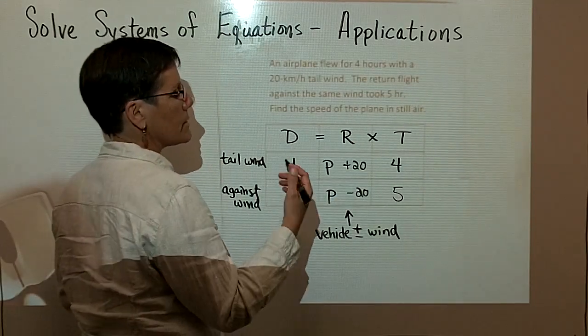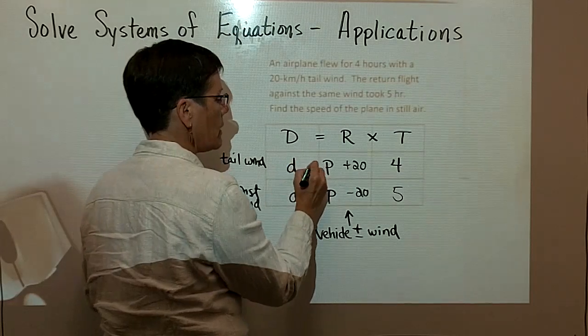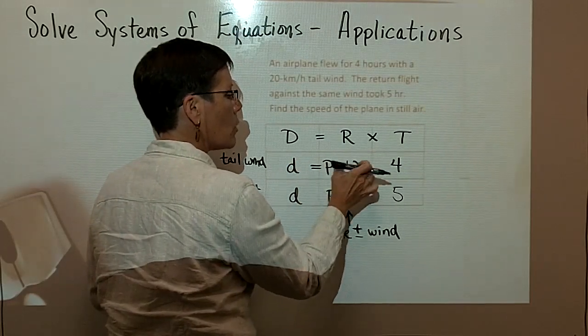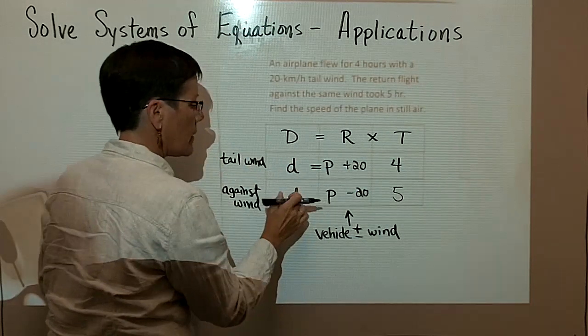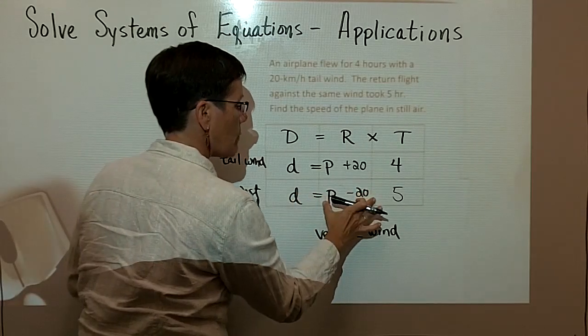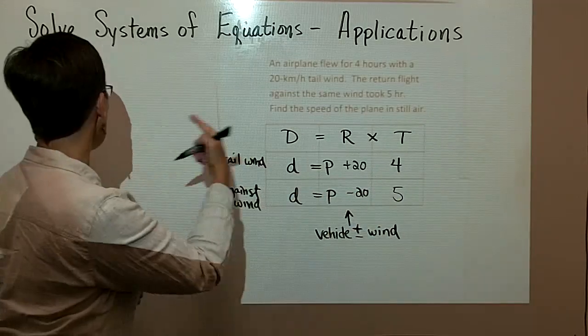The first one is going to be d equals this binomial times 4. And then d equals this binomial times 5. I'm going to write it over here. So I have the first one. I'm going to write it up high.